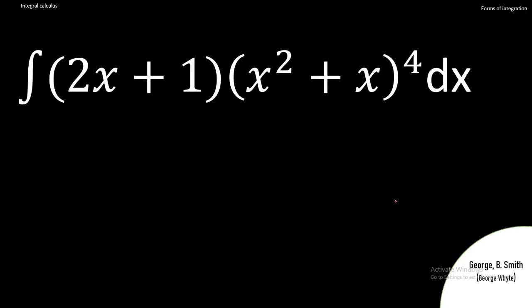For example, we are asked to integrate (2x + 1)(x² + x)^4. The first thing to recognize is that this is a product of two functions: 2x + 1 and (x² + x)^4. Whenever you have two products, your first approach should be to look out for the one having the power. There are cases where this doesn't apply, but the intuition develops as you solve more questions.